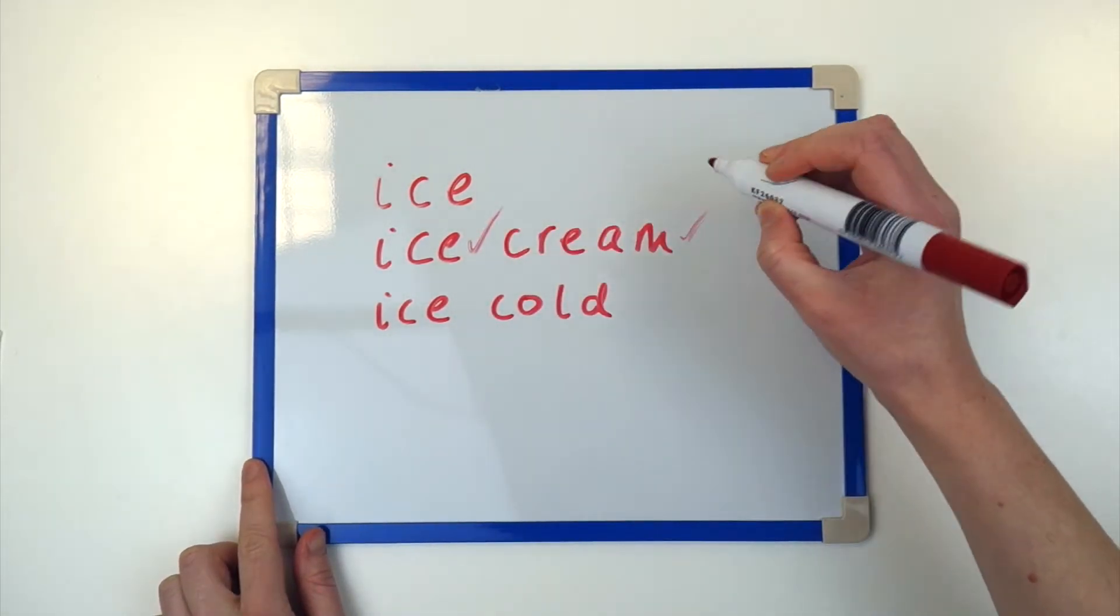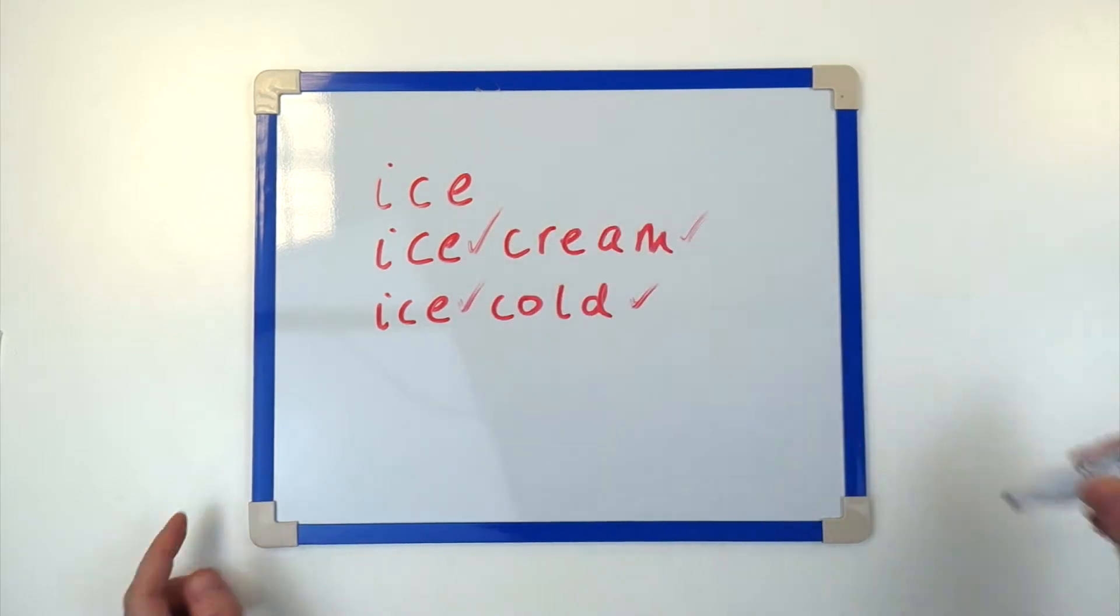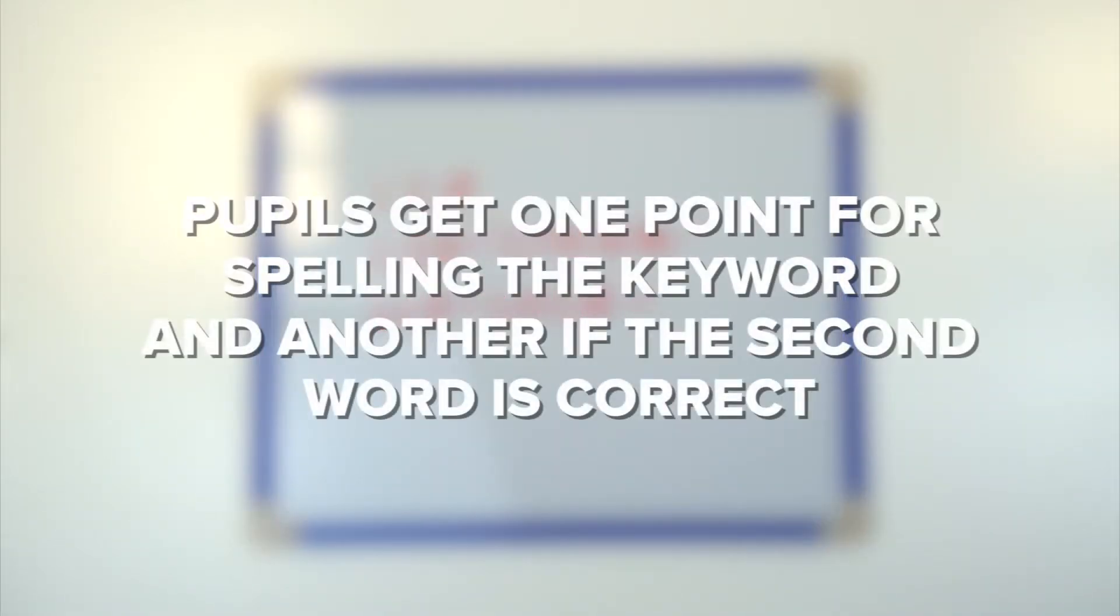Children get one point for spelling the keyword you've given them, which will be a grapheme you are learning that week, and an extra point if the second word is also correct.